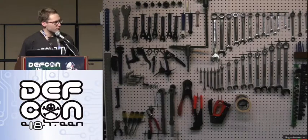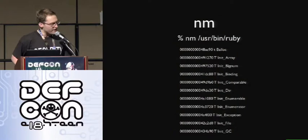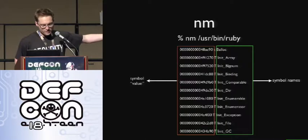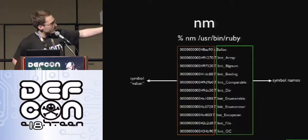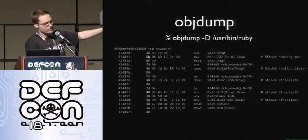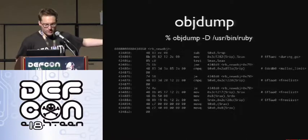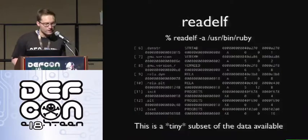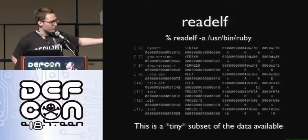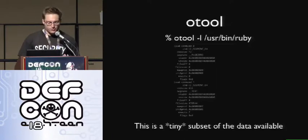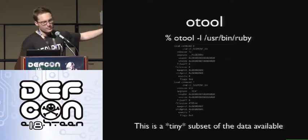Let's look at some useful tools for dissecting objects before we start writing code. Running NM on your binary gives you symbol values on the left and symbol names on the right, with information in the middle about what type of symbol it is — local, global, undefined, whatever. Objdump is also useful — you can get it on Linux; for OSX you have to find binutils and build it. If you run objdump on your Ruby binary, you get offsets on the left, opcodes, instructions, and helpful metadata. There's also readelf for ELF objects, which comes on Linux and outputs a huge amount of information. And otool is the complement on OSX that outputs useful information about Mach-O objects.